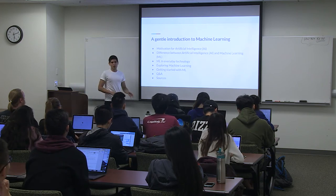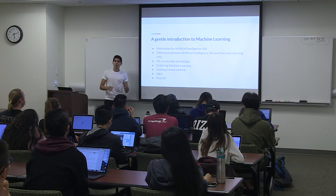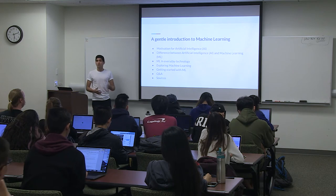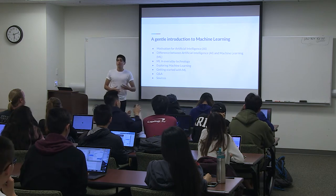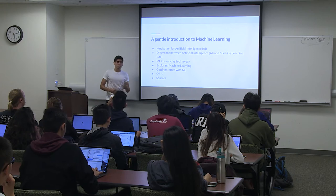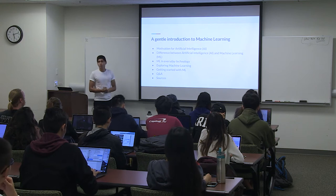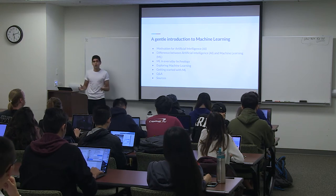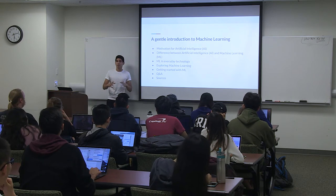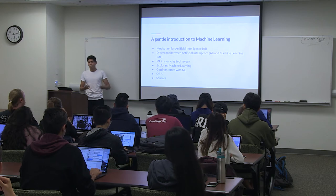Here's an overview of what we're going to be talking about today. We'll start with a motivation for AI — a little history of artificial intelligence. Then we'll talk about the difference between AI and machine learning, go into some examples you've probably seen in technology, and explore machine learning in more detail with examples related to data and algorithms. Towards the end, I'm going to do a quick demo, and then we'll do Q&A. I'm also going to share the sources I used, which is really good information if you're interested in learning more.